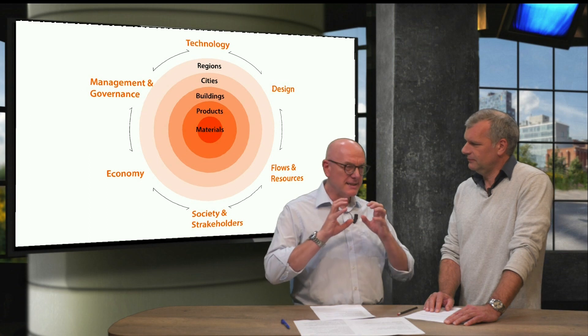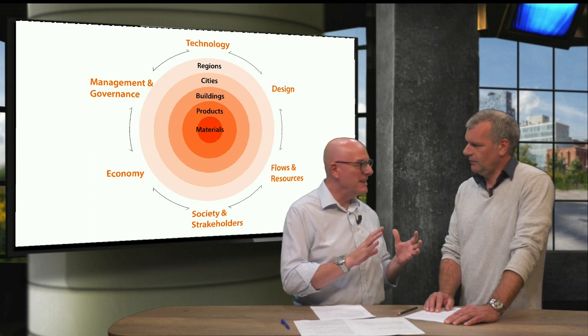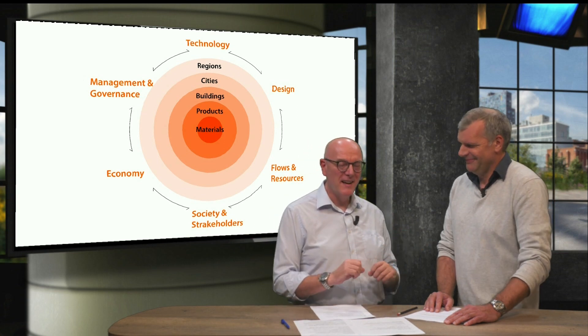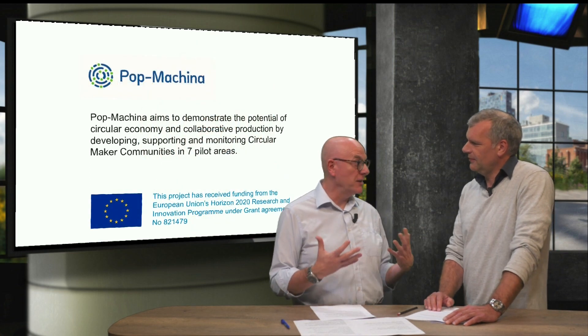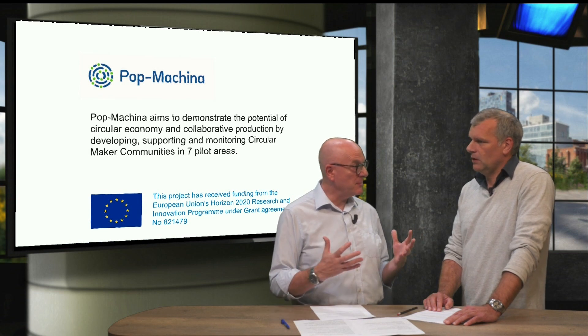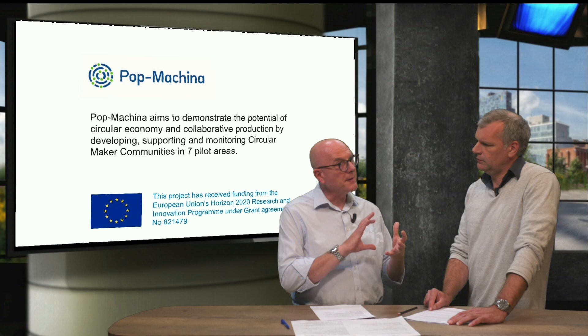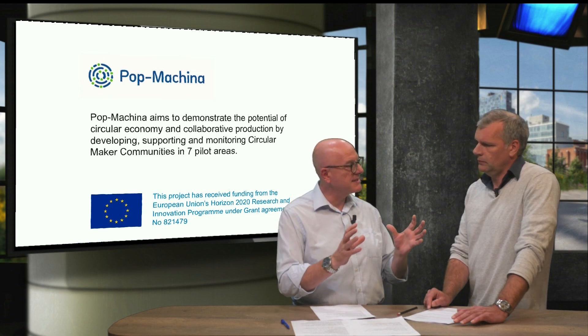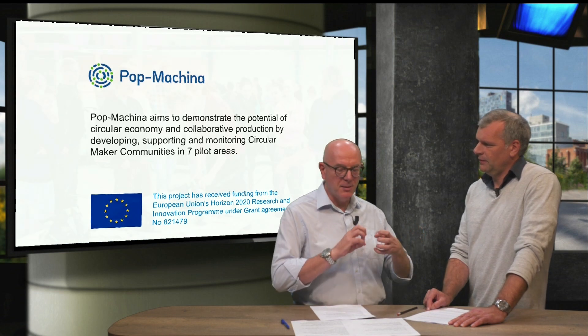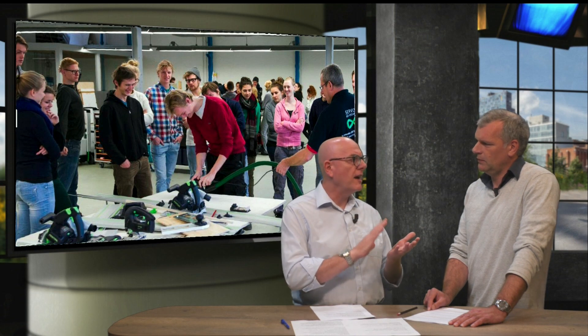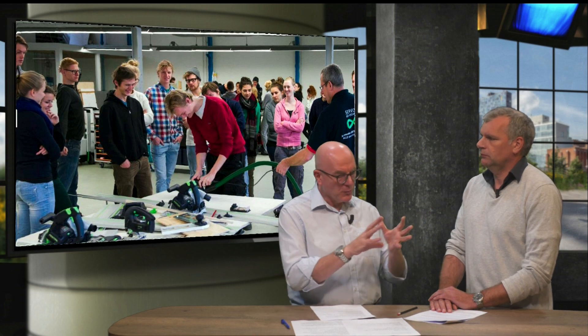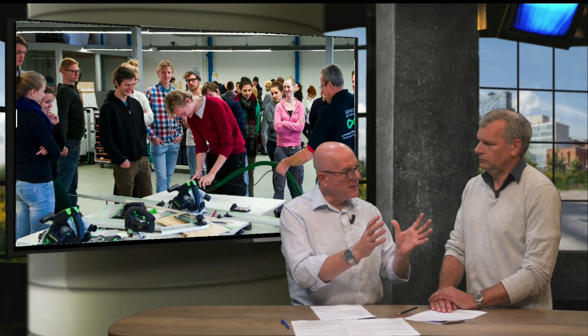We've got a super new project. It's an exciting circular-based project called Pop Makina. It's funded by the European Union, a four-year program with about 25 partners involved and a budget of about 10 million euros. We've got municipalities, cities, companies, universities, and not-for-profits — all sorts of organizations involved. What we want to do is develop circular maker communities. These are things like Fab Labs, repair cafes, and exchange hubs — all kinds of activity going on in cities that we could collectively call circular maker communities.